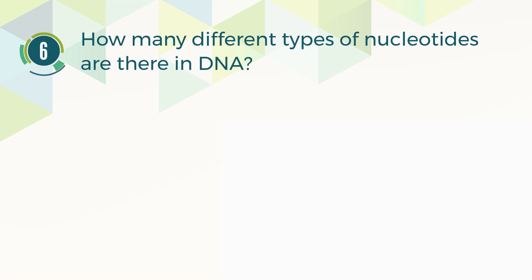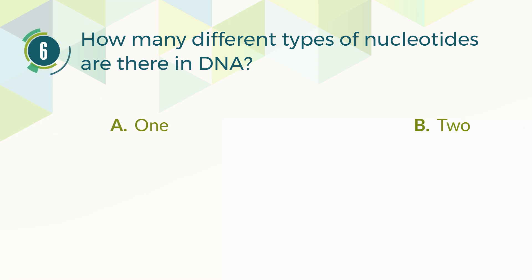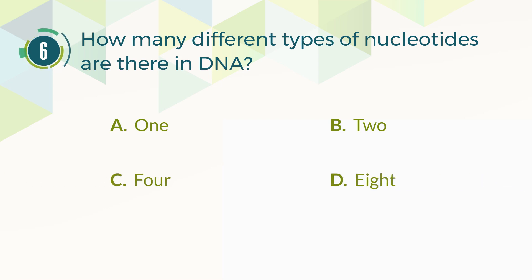Number 6. How many different types of nucleotides are there in DNA? A. 1. B. 2. C. 4. D. 8.